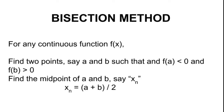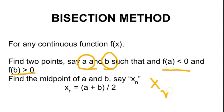Bisection method. This is the algorithm of the bisection method. For any continuous function f(x), we have to find two points a and b such that f(a) < 0 and f(b) > 0. Then we find the midpoint x_n = (a + b) / 2.